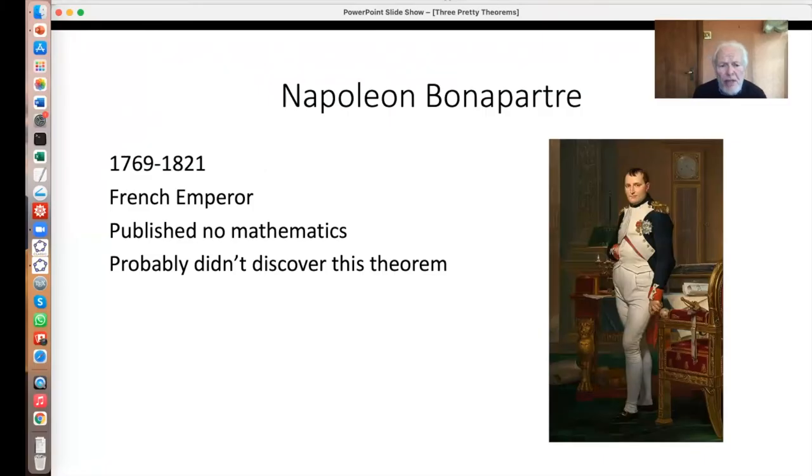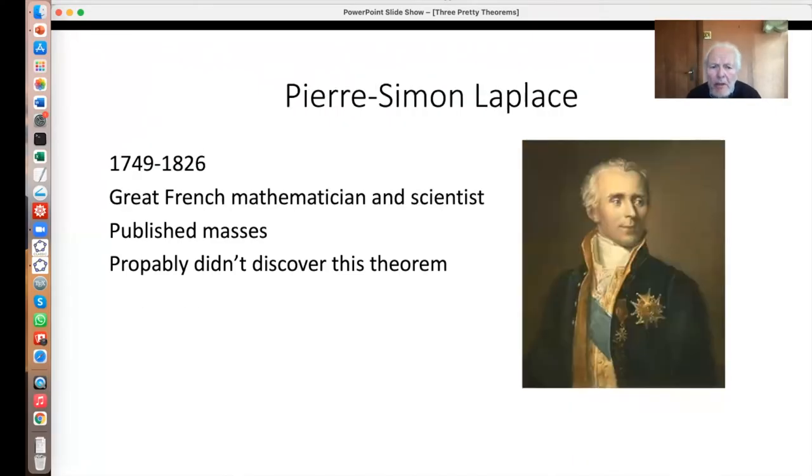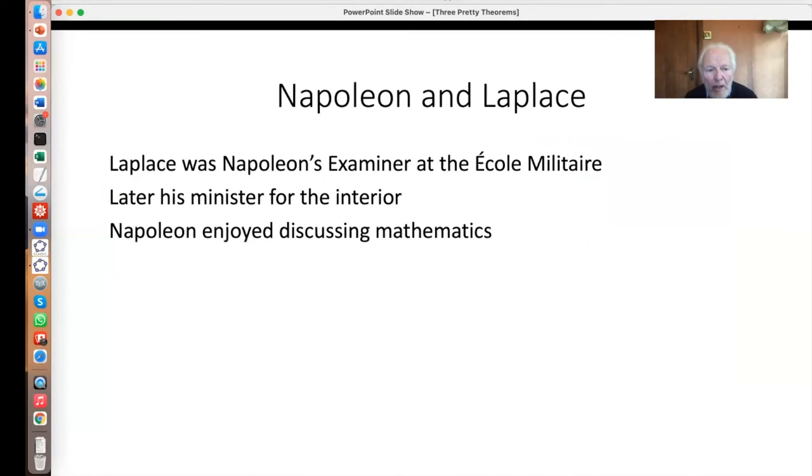Then the third one is Napoleon's theorem. Yes, that really is Napoleon Bonaparte, the emperor. That's sort of another half century earlier. He published no mathematics. He wasn't a mathematician and he probably didn't discover this theorem. However, consider this chap, Pierre Simon Laplace. I'm sure you've heard of him as a great mathematician, also French, roughly the same era. And he published lots and lots. He probably didn't discover this either. However, Laplace and Napoleon knew each other well. Laplace was Napoleon's examiner at the École Militaire, roughly 20 years his senior. And later on, he was his minister for the interior.